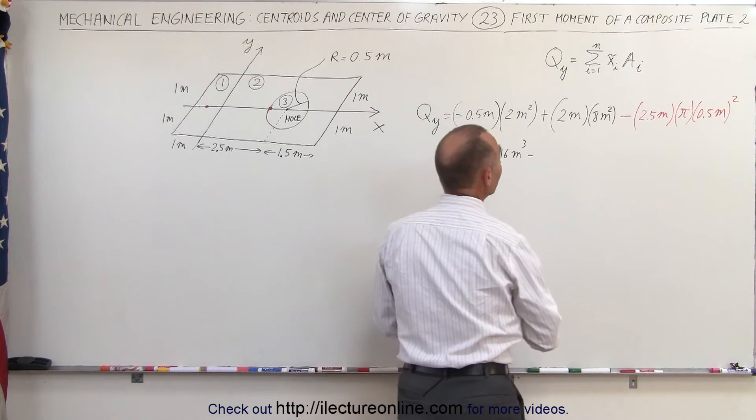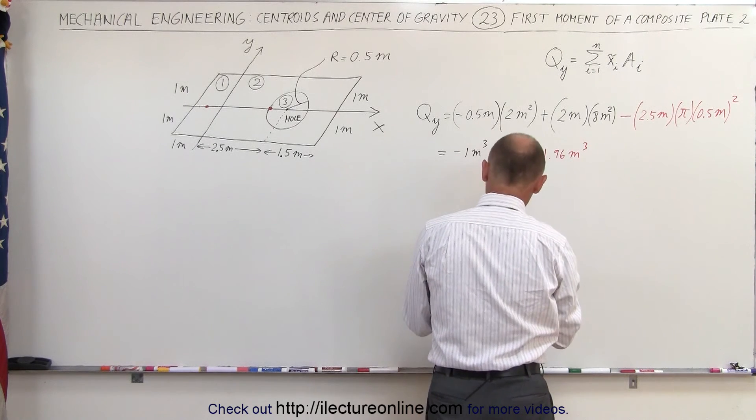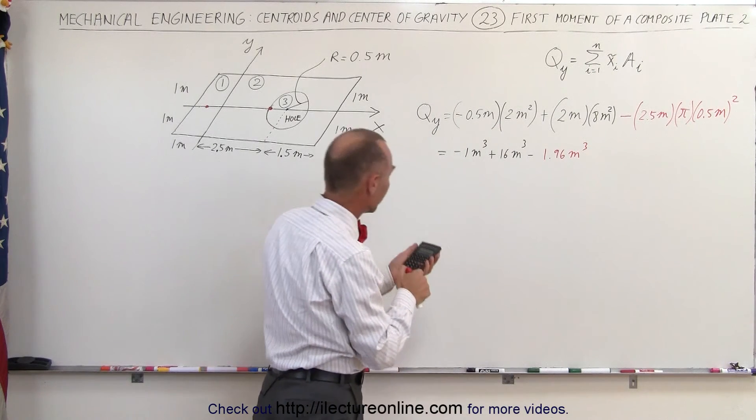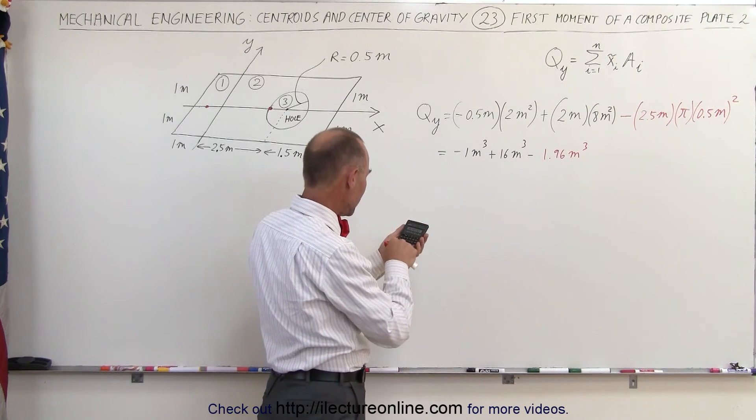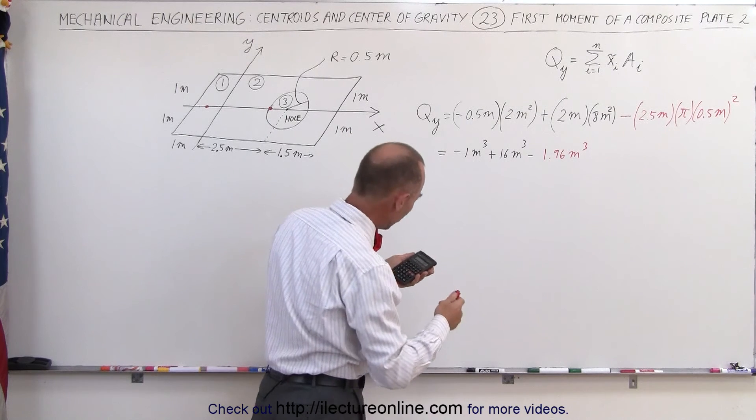So minus 1.96 meters cubed. Adding all that together, we get 15 minus 1.96, we get 13.04.